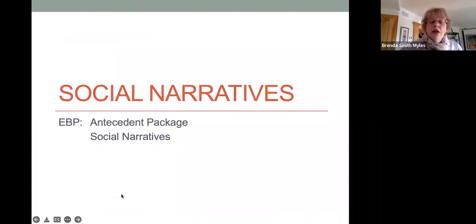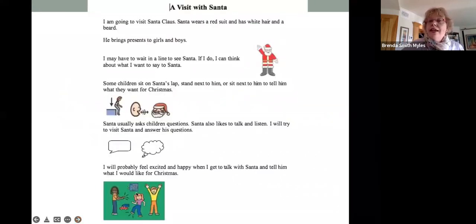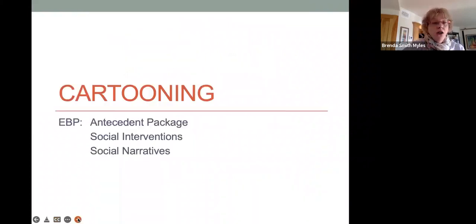Social narratives are also ways to teach unwritten rules. For example, here is a social narrative about a visit with Santa Claus. And what has happened is all the things that people generally just figure out about Santa Claus are written here so that when the child with autism visits Santa, he knows exactly what to expect.